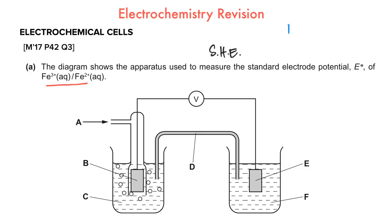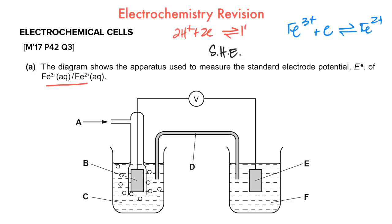For each half cell there's an accompanying half equation, like Fe³⁺ becoming Fe²⁺. If that is the half cell, the other would have to be a standard hydrogen electrode, whose half equation would be 2H⁺ + 2e⁻ → H₂. It's always good to look at the data booklet for half equations. The component connecting both half cells is the salt bridge, whose function is to complete the circuit by providing ions and preventing the buildup of charge in either half cell.